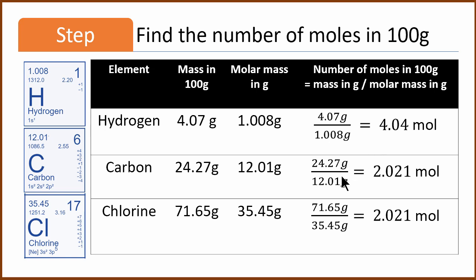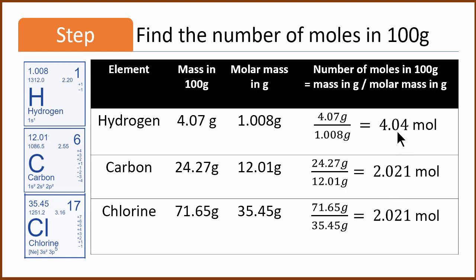Similarly, if you calculate for carbon and chlorine, you find that there are 2.021 moles of carbon and 2.021 moles of chlorine. For carbon, we use 12.01 as the atomic weight. For chlorine, we use 35.45. So in 100 grams, we have 4.04 moles of hydrogen and 2.02 moles each of carbon and chlorine.